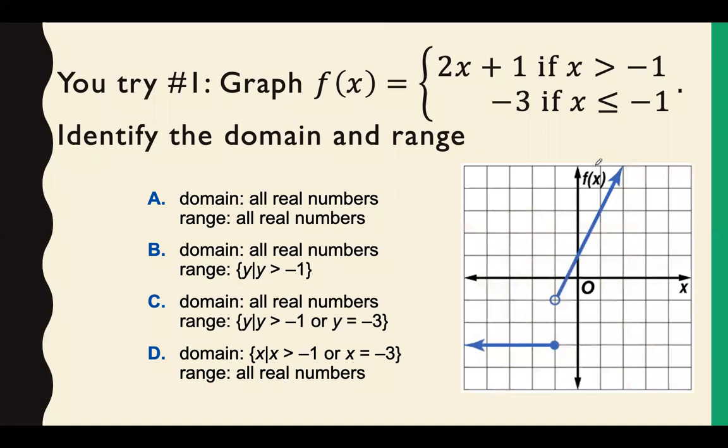All right, so the first thing we would do is go ahead and graph our function. So this is what we would get. We do have our constant here of negative 3, and then 2x plus 1 going to the right. Our domain is all real numbers. We exist from end to end for our x values. And that does mean, since we have an open and a close that's lined up, we do exist at x equals negative 1.